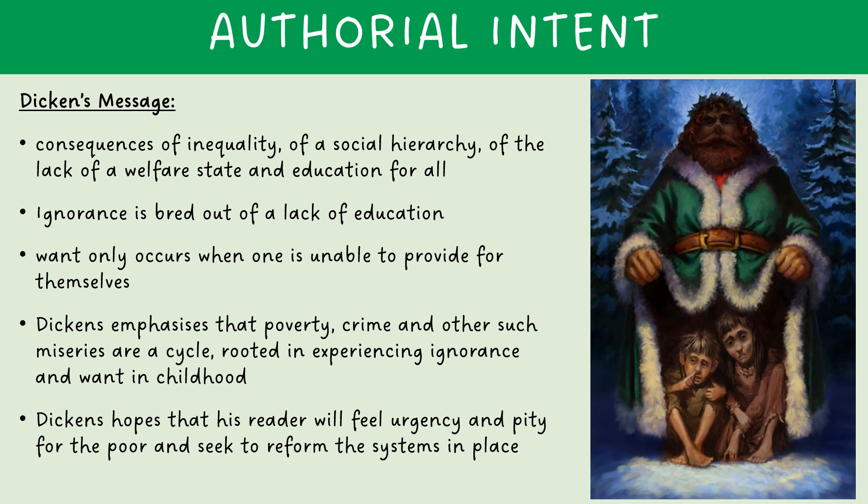So why did Dickens do this? Dickens was an advocate for social justice who wanted society to treat each other fairly and equally. He addressed these issues in his novella to hold a mirror up to his readers and have them question their own morals and actions towards the poor. Ignorance and Want are the consequences of inequality, a social hierarchy, a lack of welfare, and a lack of education for all. Ignorance is bred out of a lack of education and want only occurs when one is unable to provide for themselves. By including Ignorance and Want in his story, Dickens emphasises that poverty, crime and other such miseries are a cycle rooted in experiencing ignorance and want in childhood, and by depicting them as children, he hopes readers will feel urgency and pity and take action to address their own prejudices against the most vulnerable people in society.